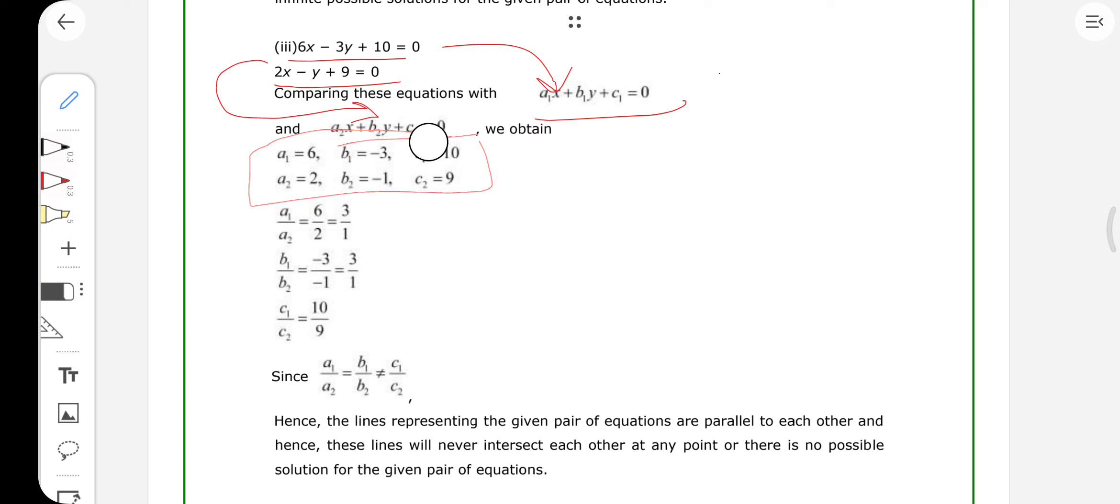After getting these values, we will find the ratios of a1 upon a2, that one is 3 to 1, b1 upon b2, that one is also 3 to 1.